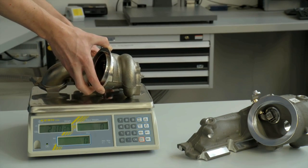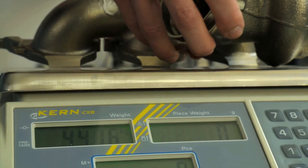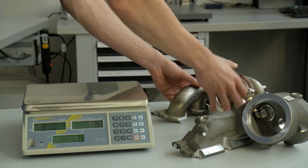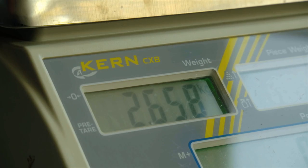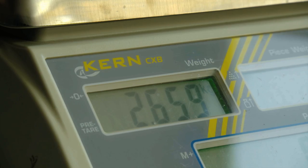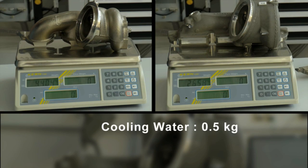Aluminum also brings advantages in terms of weight. Conventional turbine housings made of steel weigh a good 4.4 kg. The new housing is around 1.7 kg lighter. Even taking into account the weight of the cooling water, the aluminum housing is still 1.2 kg lighter than its steel counterpart.